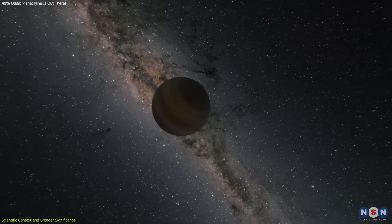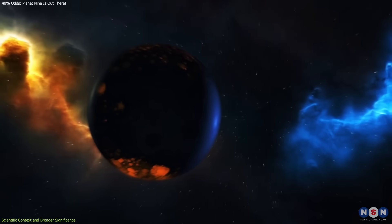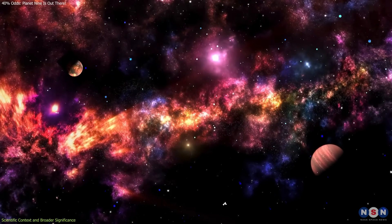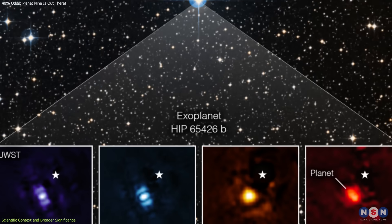The study found that most planets ejected in these early interactions do not remain in orbit. Instead, they are cast out into interstellar space. That helps explain the growing number of free-floating planets detected through gravitational microlensing and infrared surveys.